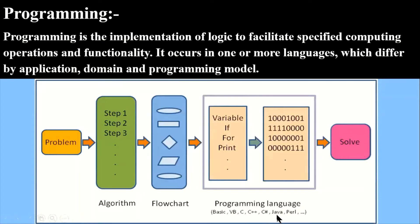Then we start writing a program or source code in a particular programming language. We use different variables, statements, and commands. After that, those commands are converted into machine code, and the computer gives us the solution, result, or output. These are the different steps we perform in programming.